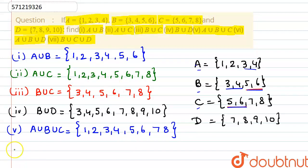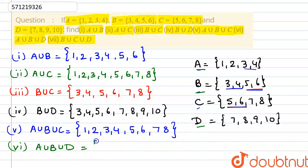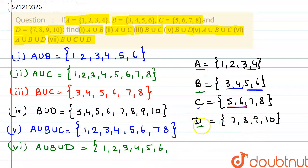For the 6th part, we are given A union B union D. We check sets A, B, and D. First, A union B gives {1, 2, 3, 4, 5, 6}. In this result and D, there are no common values, so we also write all the elements of D: {7, 8, 9, 10}. So A union B union D = {1, 2, 3, 4, 5, 6, 7, 8, 9, 10}.